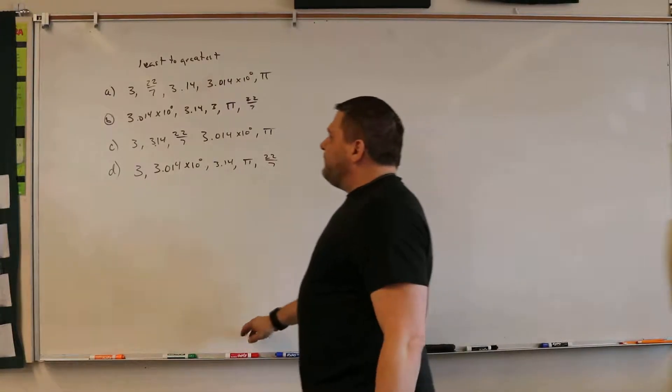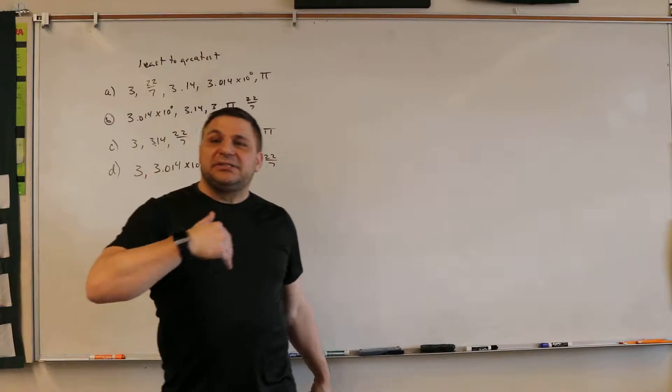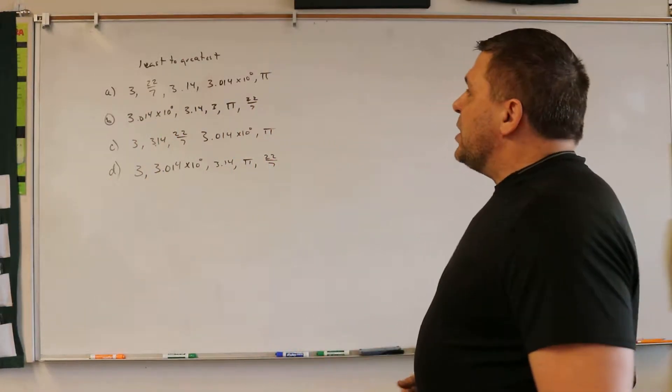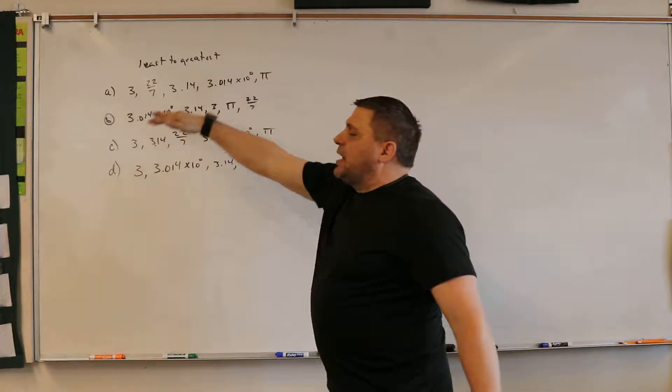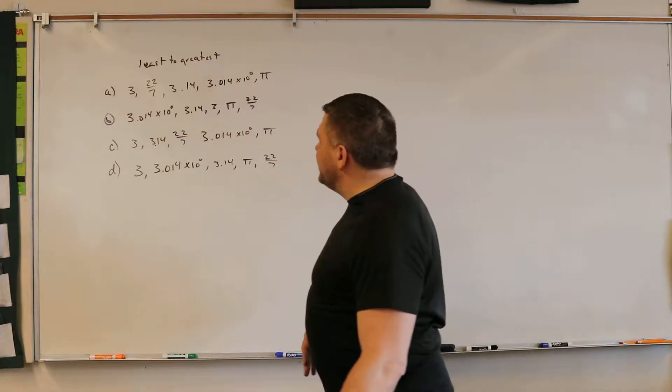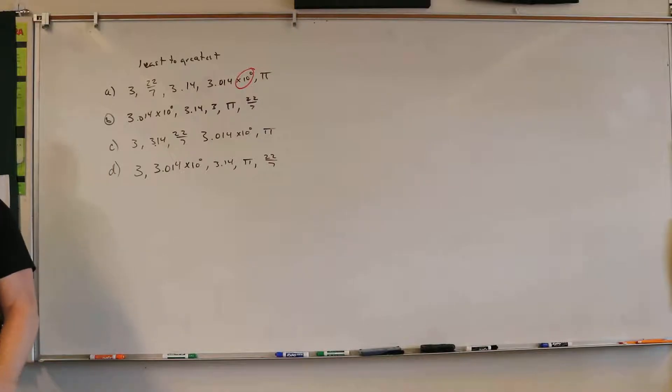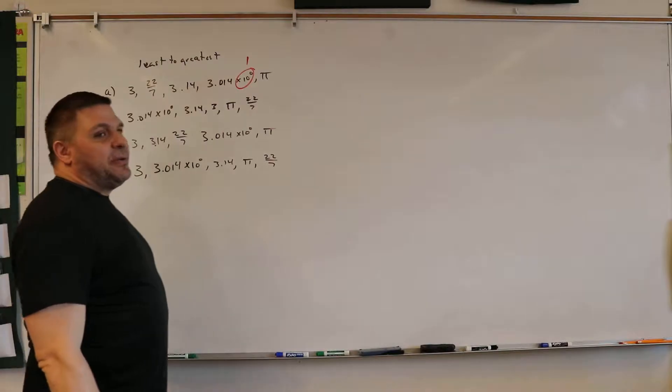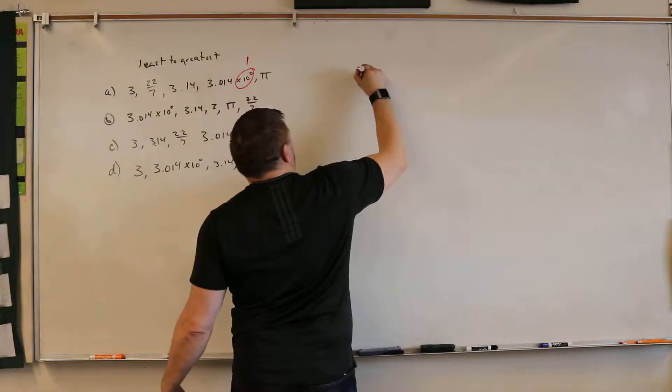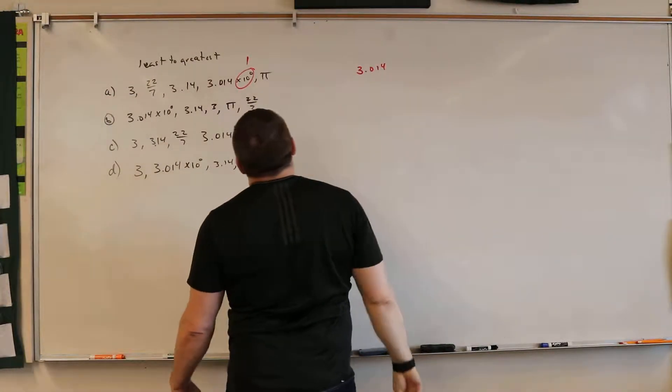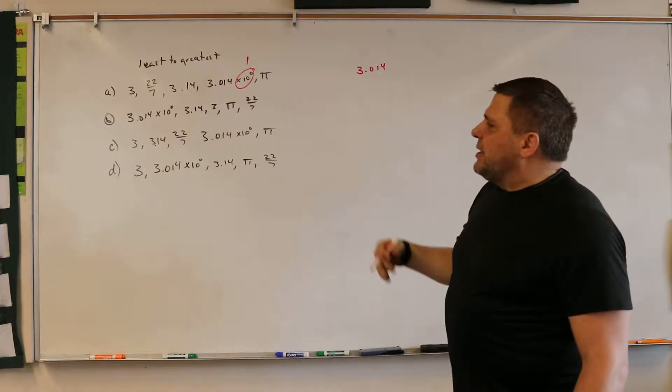Alright, ready? So what they want us to do is go from least to greatest. So what we should know is put these in numbers. The first thing I notice is 10 to the 0. What is 10 to the 0? 1. So what's 1 times 3.014? 3.014. Okay. And then what?